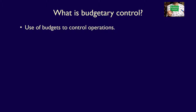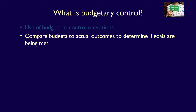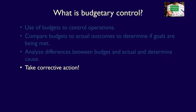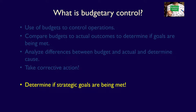Budgetary control is the use of budgets to control the operations of the organization. Recall that budgets reflect management's strategic goals for the organization. When budgets are compared to actual outcomes, management gets feedback on how well employees are progressing towards those goals. They can analyze the differences between actual results and planned results and determine their causes. They can also make changes if necessary by taking corrective actions. Without budgetary control, management would never know if the organization is meeting their strategic goals.